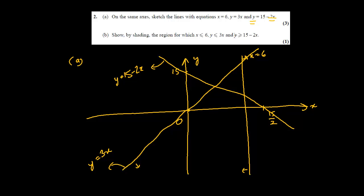When y ≥ 15 − 2x, it means it has to be above that line. So we have three conditions: below y = 3x, on the right-hand side of x = 6, and above y = 15 − 2x. The shading is the enclosed region satisfying all three. Always remember: an inequality region is always an enclosed region. Part B is done.